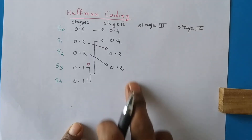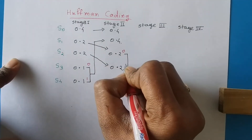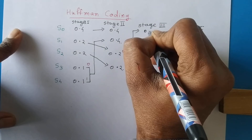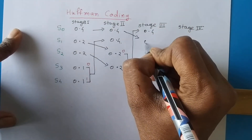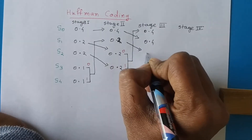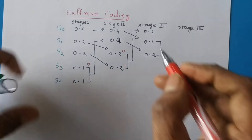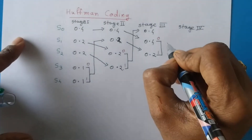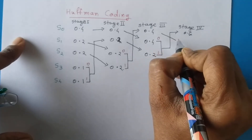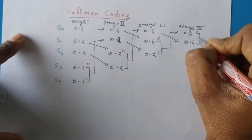In stage two there are only four probabilities, so we will add the two lowest probabilities again, assign 0 and 1, and propagate the sum to the next stage. The addition is 0.4, and we arrange the probabilities in decreasing order. Adding the next two probabilities gives 0.6, we assign 0 and 1, propagate to the next stage. Since 0.6 is higher than 0.4 it is placed first, and the addition of these two probabilities is 1, so we stop here.